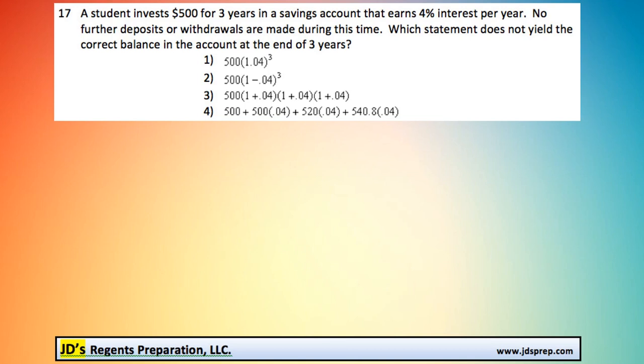There's a handy formula that's going to help us with this question: A equals P times 1 plus r to the power of t. This formula is used to calculate the amount of money for either an investment or a loan. A represents the final value or the final amount of money.